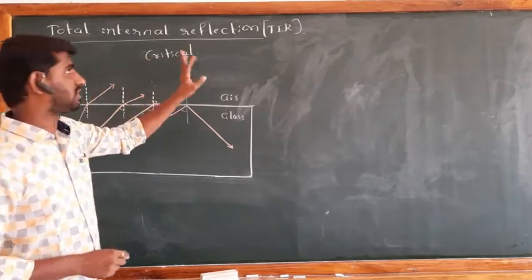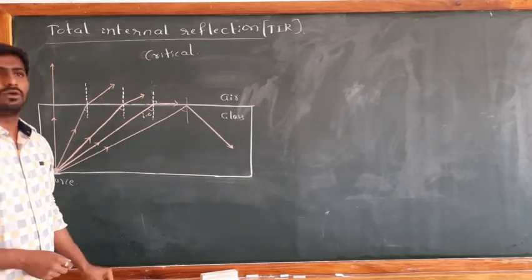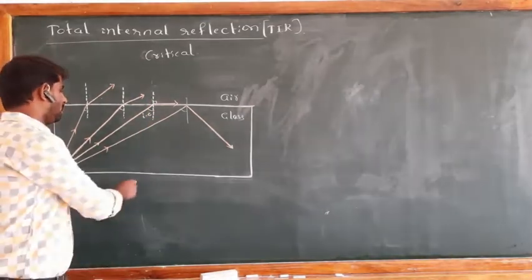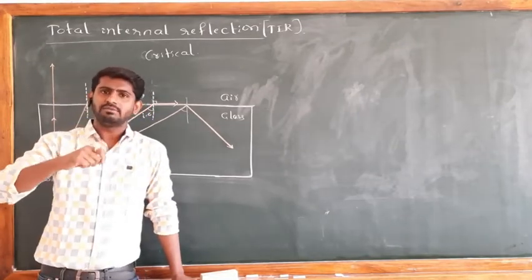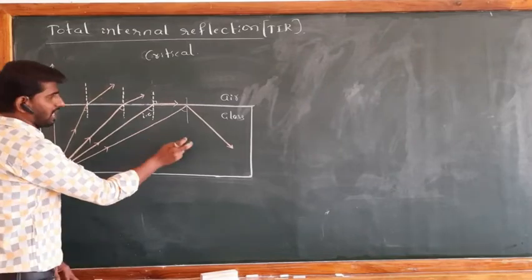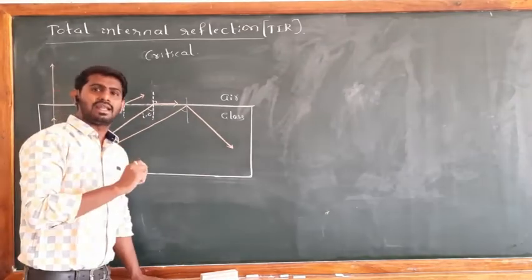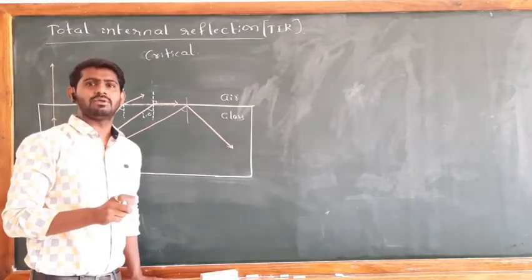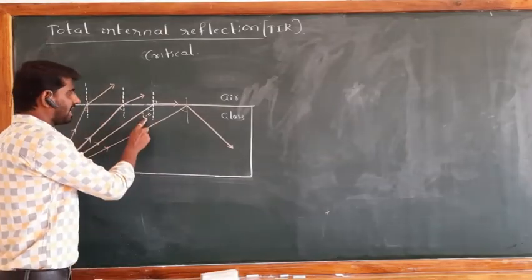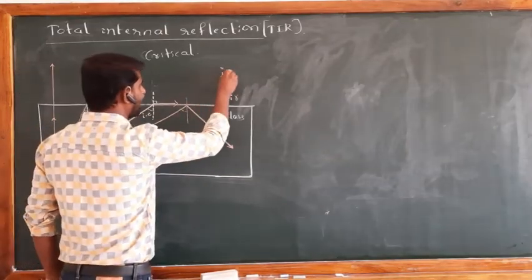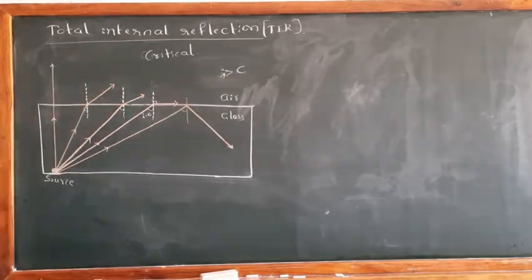What is TIR — Total Internal Reflection? Whenever light is moving from a denser medium to a rarer medium, the whole light is reflected back to the same medium without any refraction, for the angle of incidence I greater than the critical angle C. The angle of incidence must be greater than the critical angle.